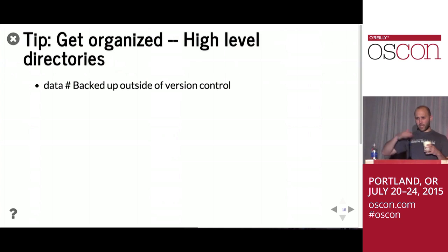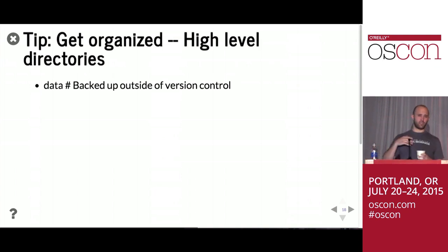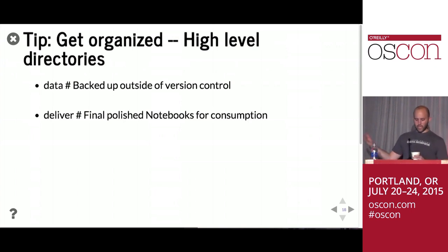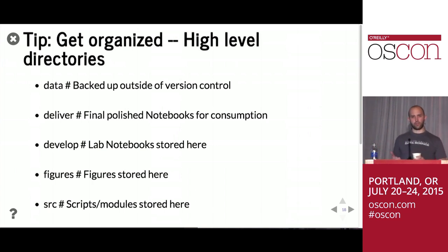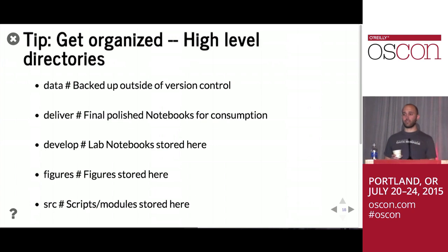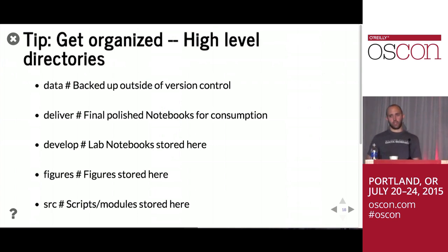For the high-level directory structure of a data science project, I recommend: a data directory backed up outside of version control (especially for larger data); a deliver directory for final polished notebooks or notebooks referenced by other notebooks; a development directory for lab notebooks; a figures directory for saved figures; and a source directory for scripts. If you run code repeatedly — like a daily query — keep it as a script or module in the source directory. If you're just using the output a lot, put it in a notebook. It's a bit easier.